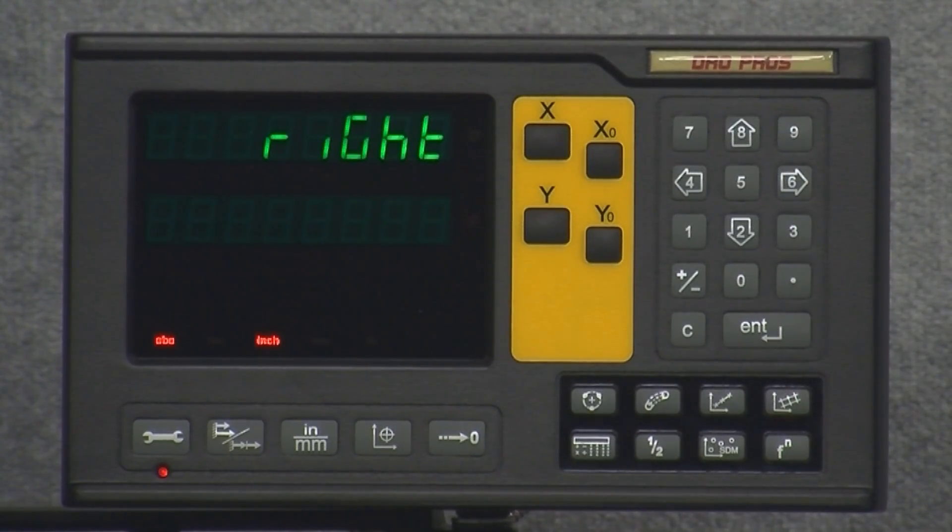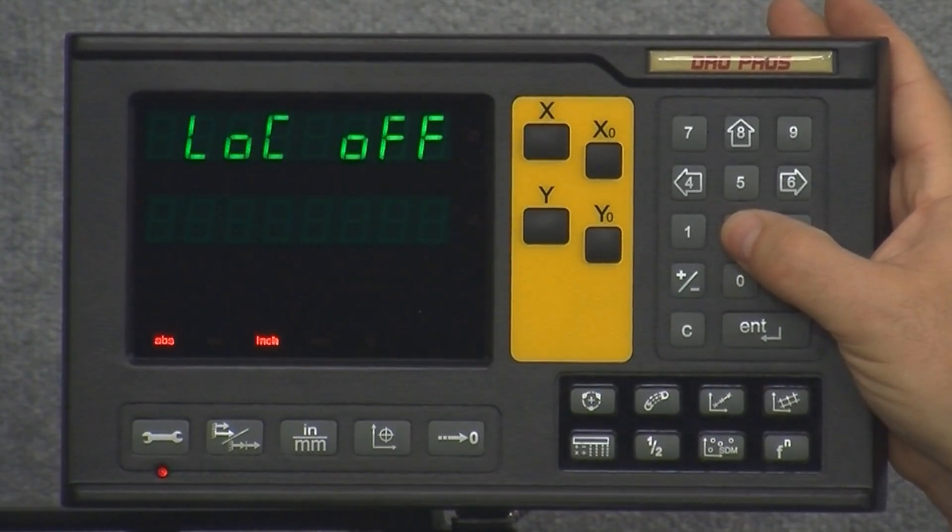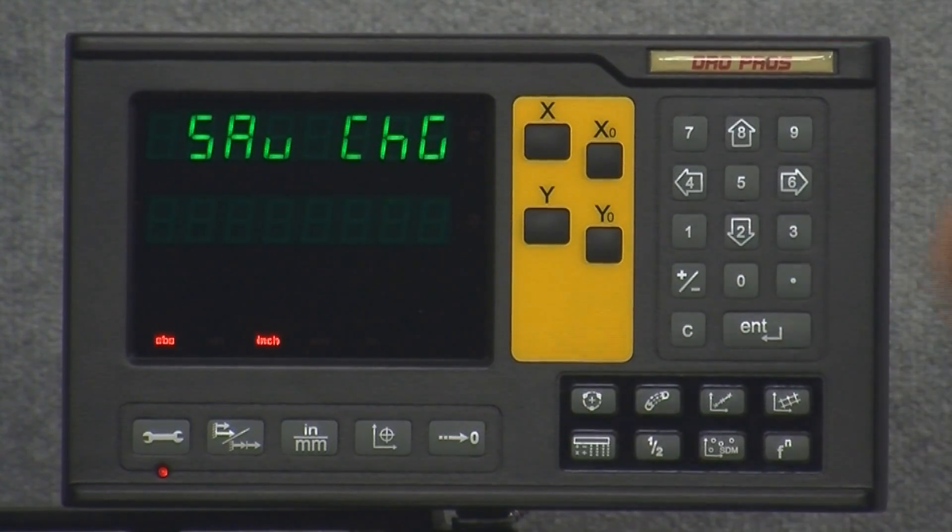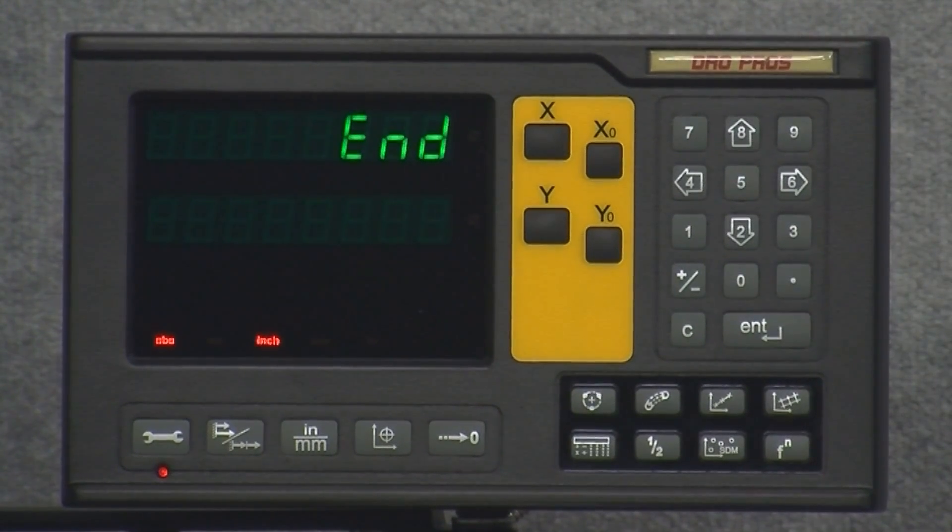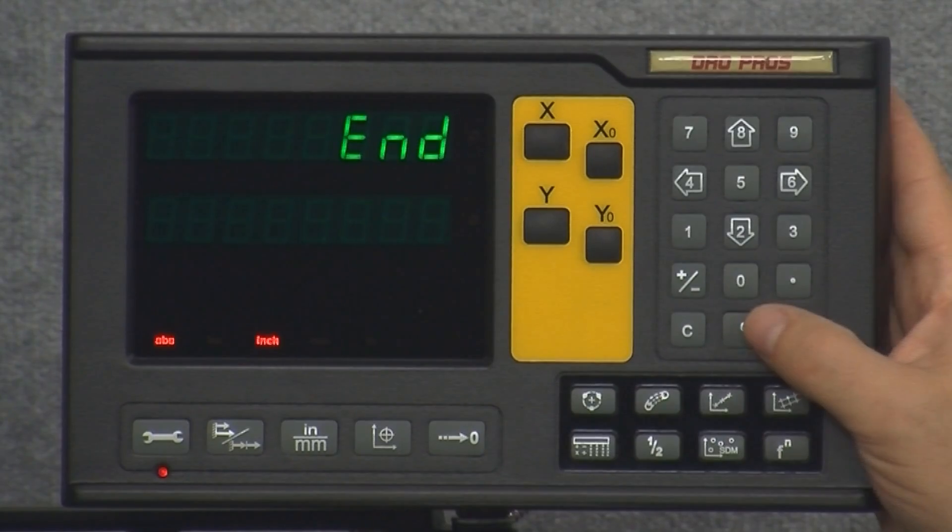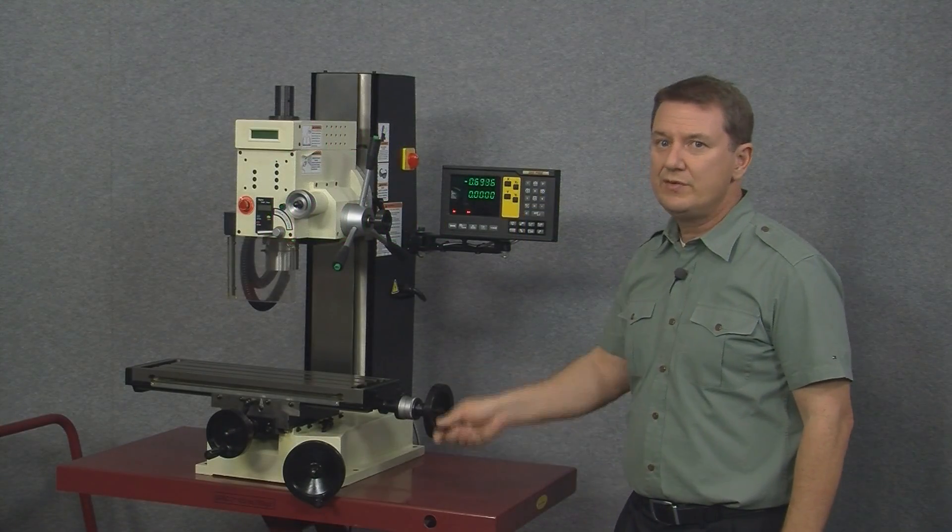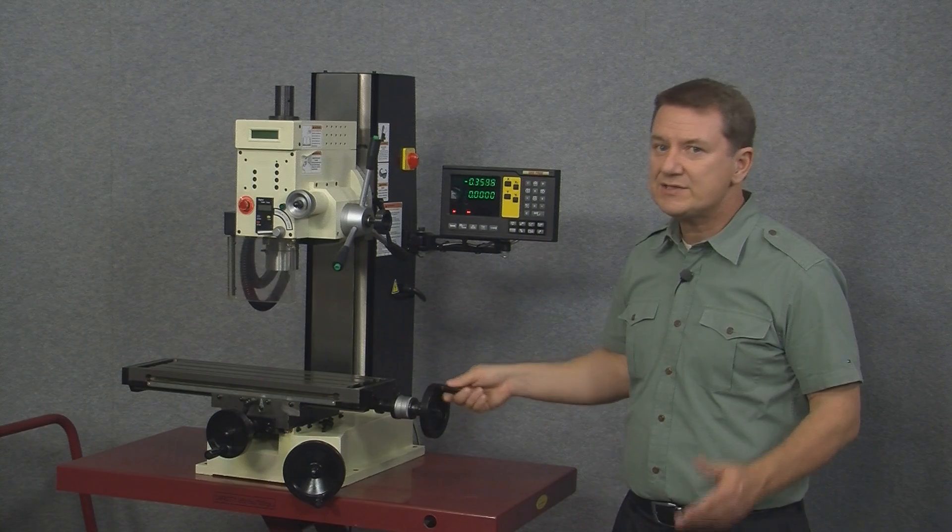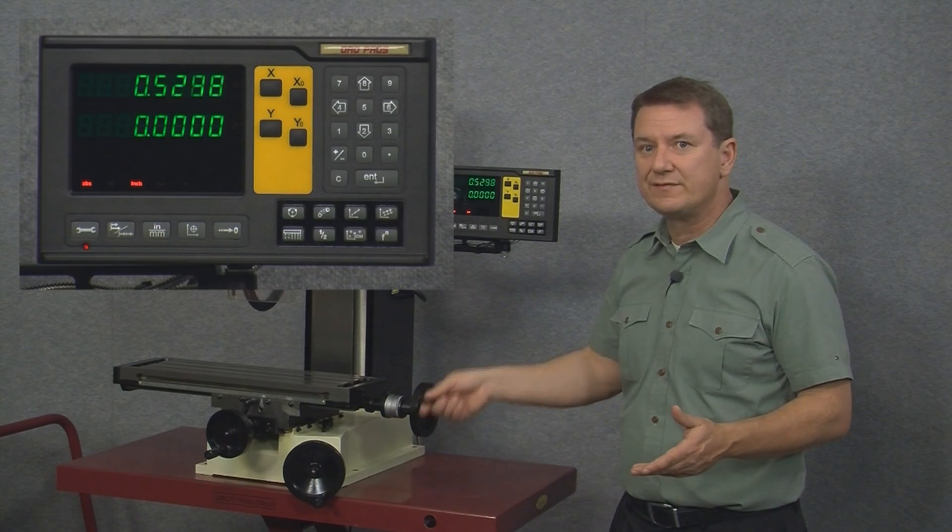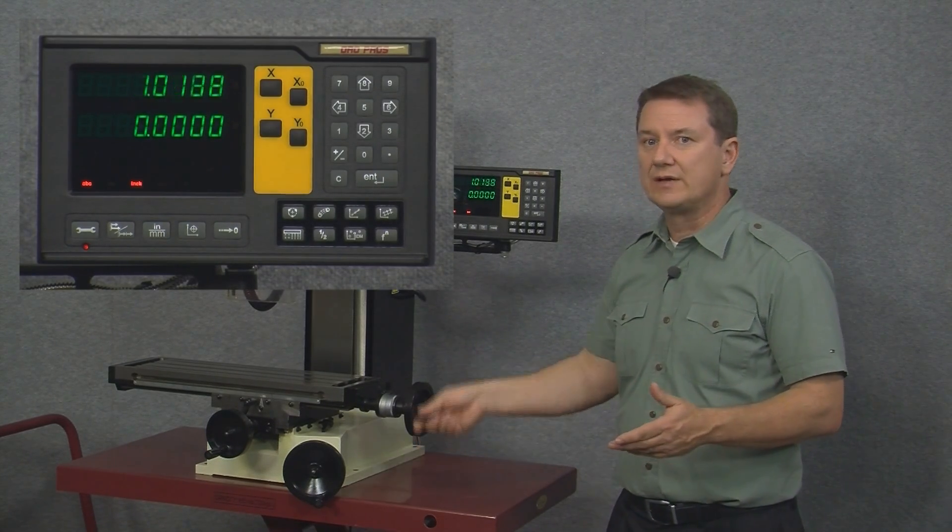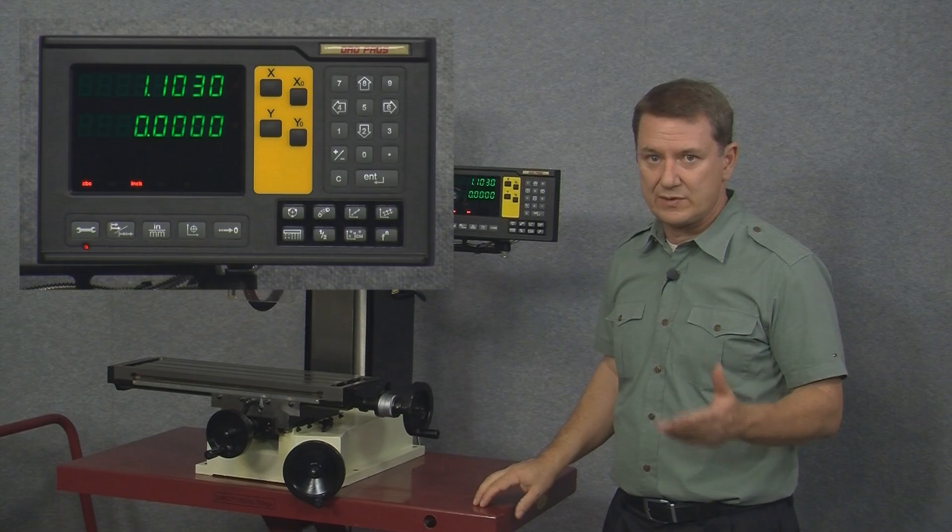And then we'll arrow down to the save change option. We'll go ahead and push the enter button. Arrow down twice more. And then push the enter button one final time. And now I can see that when I move the table to the left, my x-axis value is increasing in value or becoming a more positive number, rather than counting negative like before. So that's what I wanted to do.